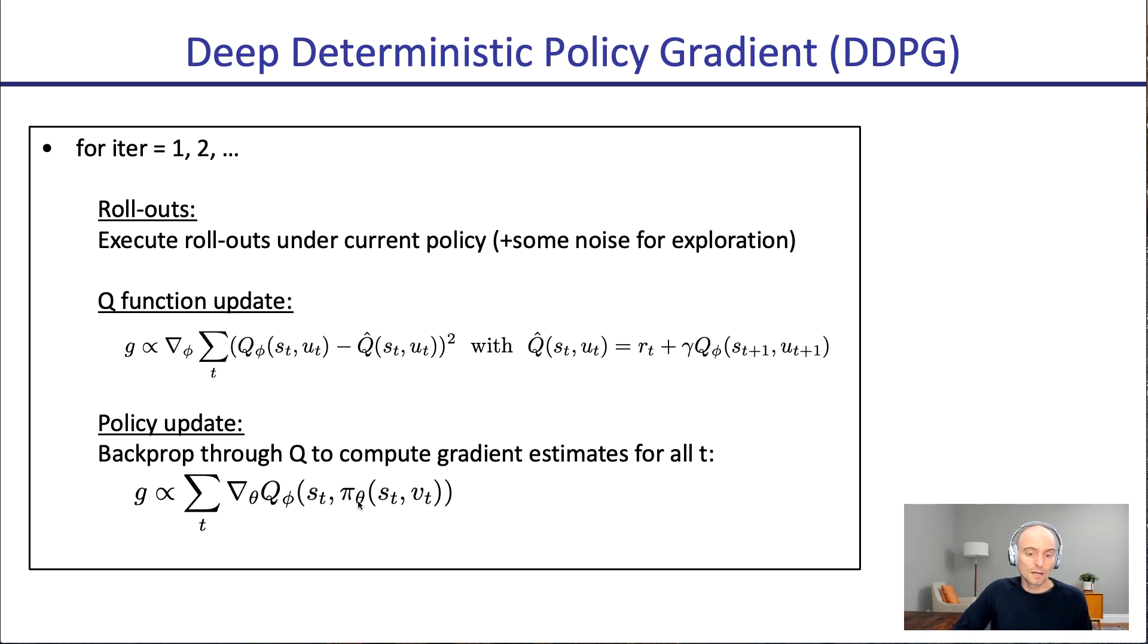And by the way, unlike the previous policy gradient methods, the standard policy gradient, as well as PPO and TRPO, which rely on the likelihood ratio policy gradient, this policy gradient here goes through the Q function. And by going through the Q function here, actually, if you want to, your policy could be a deterministic policy. Of course, for your data collection, you might still want some stochasticity. And that's why it says here, maybe plus some noise, but you can have a deterministic policy. And that's why it's called deep deterministic policy gradient. It doesn't have to be a deterministic policy, but it can be if you want it to be.